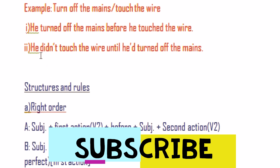Like sentence number 2: he did not toss the wire — subject, did not, second action 'toss the wire' in V1 — until subject 'he' had, had plus V3 'turned' — past perfect — that is the first action.